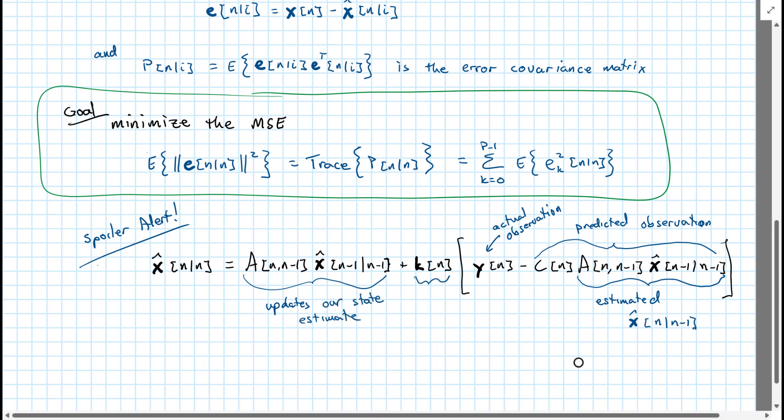This updates our state estimate. And as discussed, this is our Kalman gain. And it transforms the observation error into a correction of the state estimate.